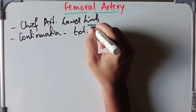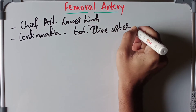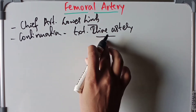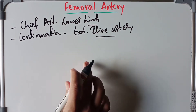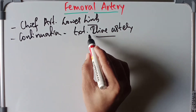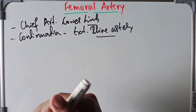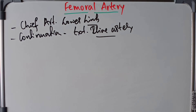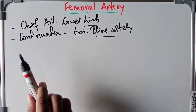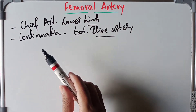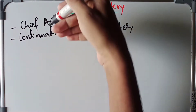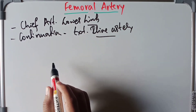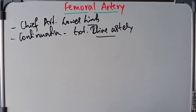The abdominal aorta gives rise to the common iliac arteries, which divide into the external iliac and internal iliac arteries. The external iliac artery, as it passes beyond the inguinal ligament, forms the femoral artery. It enters the femoral triangle behind the inguinal ligament at the mid-inguinal point and continues as the femoral artery.